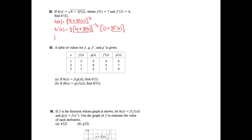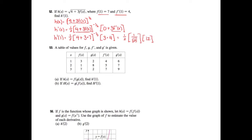To evaluate h prime of 1, I just put a 1 in everywhere. So I get 1/2 times (4 plus 3 times f of 1), and f of 1 is 7, to the negative 1/2, times 3 f prime of 1, and f prime of 1 is 4. So I have 1/2 times (3 times 7 is 21, plus 4 is 25). That gives me 1 over root 25, times 12. 12 divided by 2 is 6 and root 25 is 5, so 6/5 is my answer.